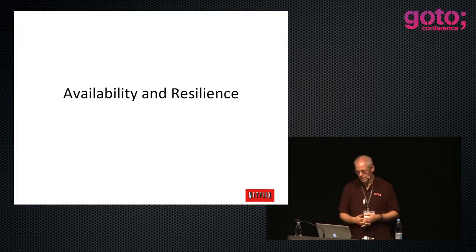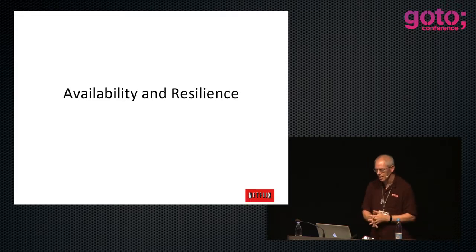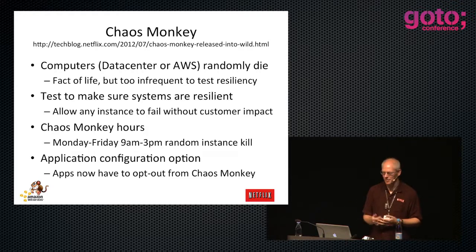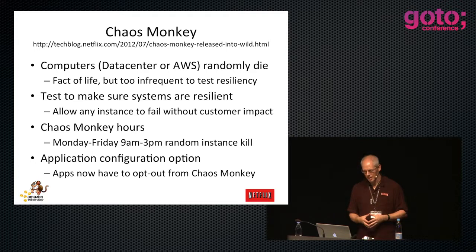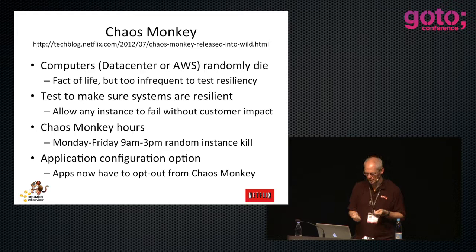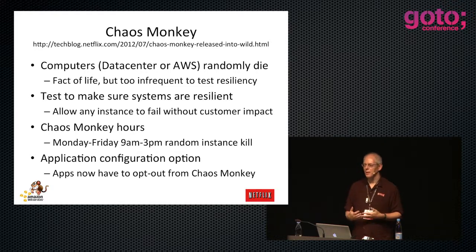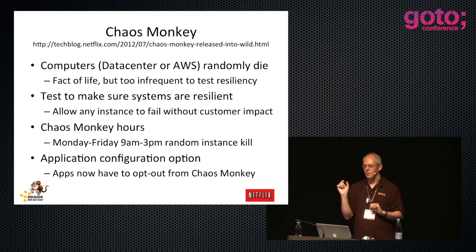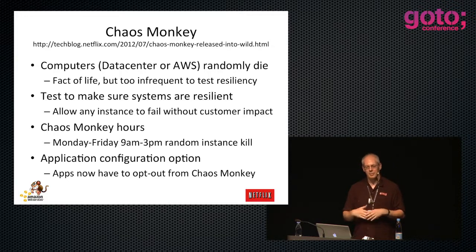Let's talk about the chaos monkey. Computers die - data center computers die. Most developers like to think of the machine they're coding to as a perfect machine that works, because that's the normal experience. But to test the error handling code you've built, you have to inject failure. In a distributed fine-grain SOA, killing individual instances injects that kind of failure mode. So between 9 AM and 3 PM every weekday, we randomly pick a machine in production and kill it.